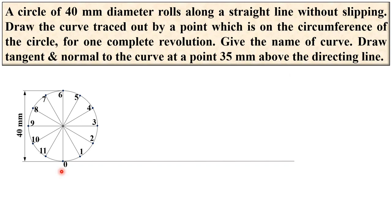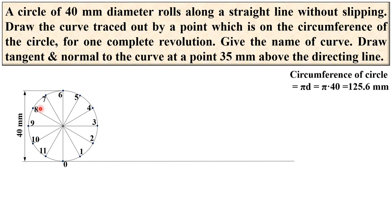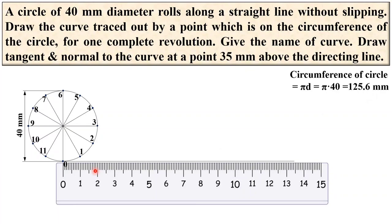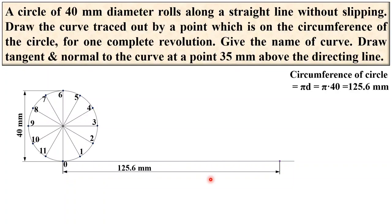Now you have to find the total distance covered by the rolling circle for one complete revolution, which is the circumference of the circle: π×d. The diameter of the rolling circle is 40 mm, so π × 40 mm gives 125.6 mm. Mark a point 125.6 mm away from the starting point — this is the end position of the rolling circle after one complete revolution.